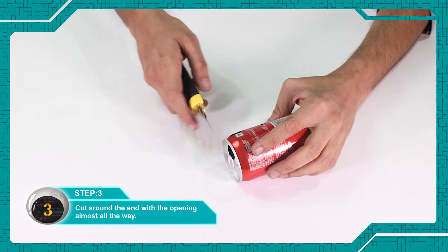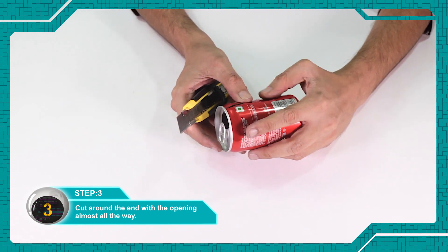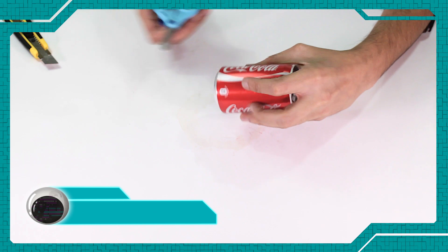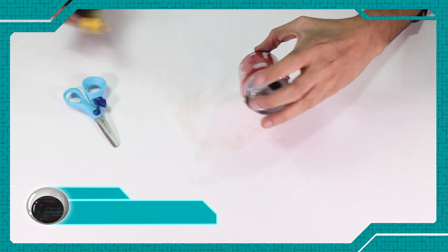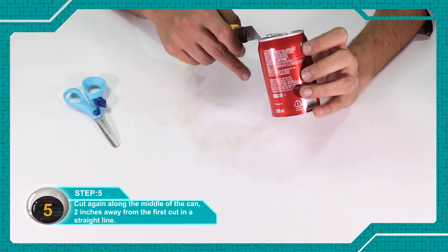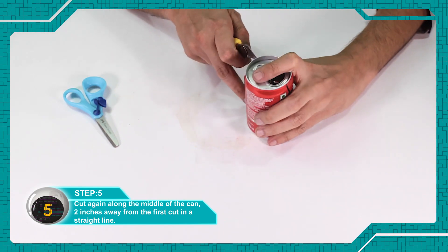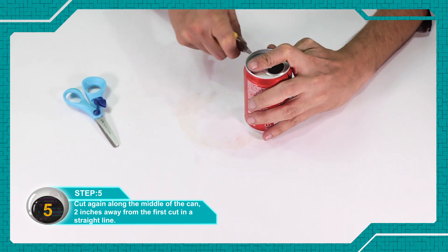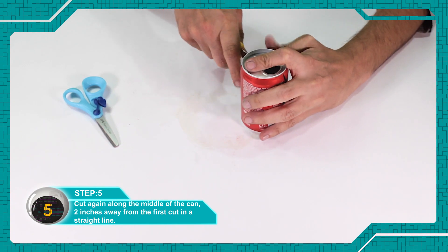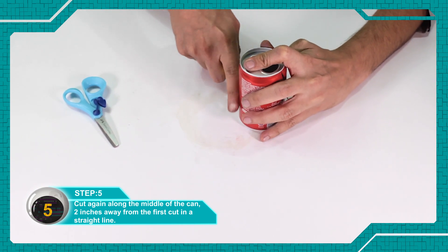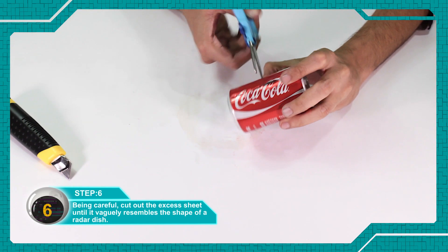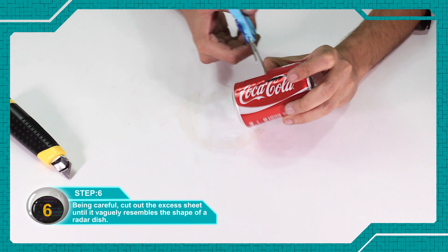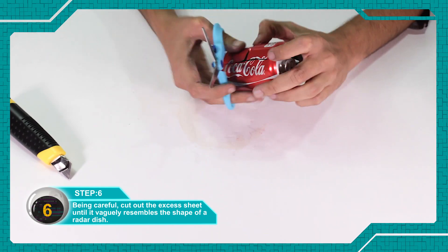End with the opening almost all the way. Cut along the middle of the can. Cut 2 inches away from the first cut in a straight line. Carefully cut all the excess sheet.